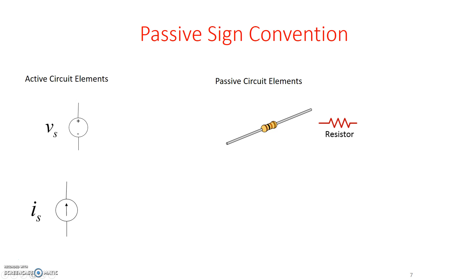Passive sign convention basically comes from — it's a convention that exists because both voltage and currents have polarities. We need to make sure that if we define the polarity of the current (since current flows through an element and voltage is measured across an element), the polarity of the voltage and the polarity of the current have some kind of relationship between them.